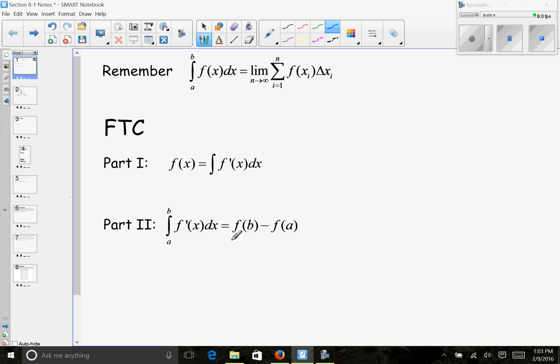What we want to do is isolate f of b. When we do that, we get that f of b equals f of a plus the definite integral from a to b of f prime with respect to x.